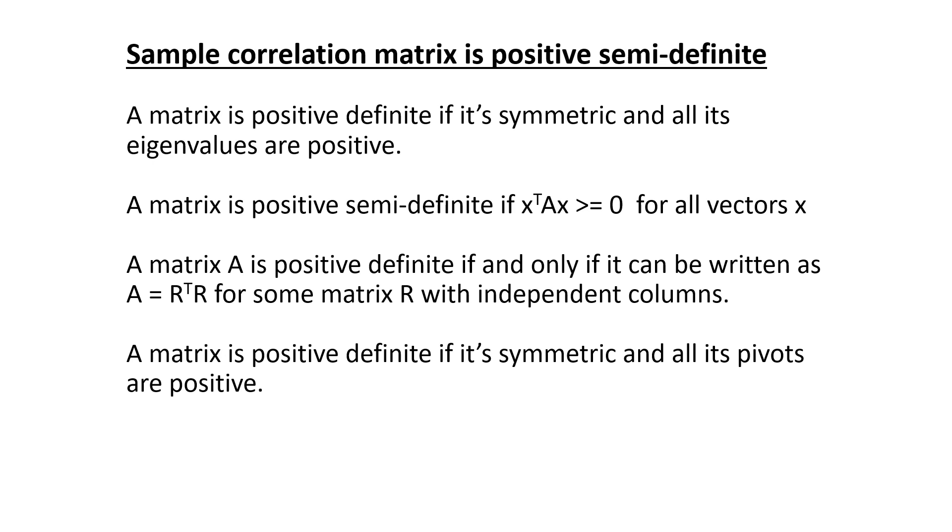A matrix is positive definite if it's symmetric and all of its eigenvalues are positive. If the quadratic form X transpose AX is greater than or equal to 0 for all vectors X. If the matrix can be written as R transpose R for some matrix R with independent columns. And if it's symmetric, all of its pivots are positive.